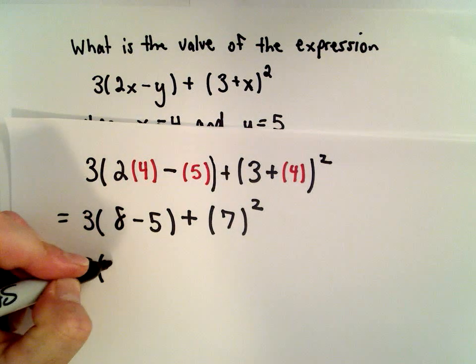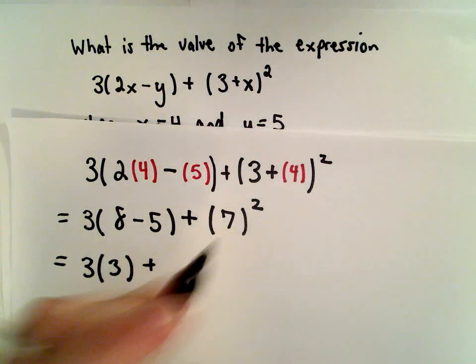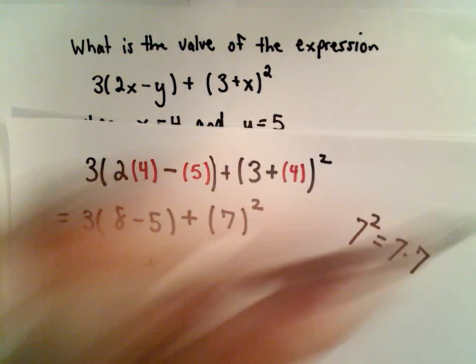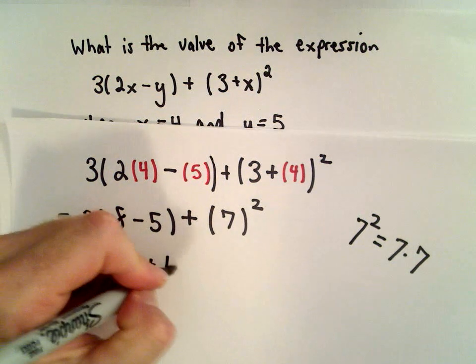8 minus 5, that's going to give us a value of 3. Recall that 7 squared just means you take 7 and multiply it by itself, so 7 times 7, so 7 squared is going to be 49.